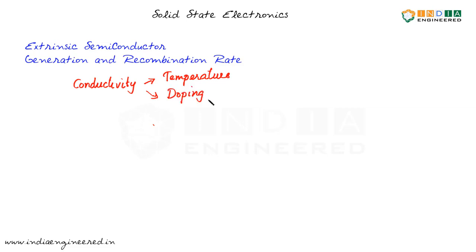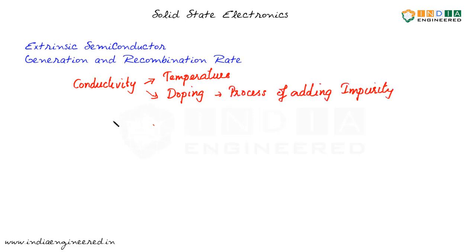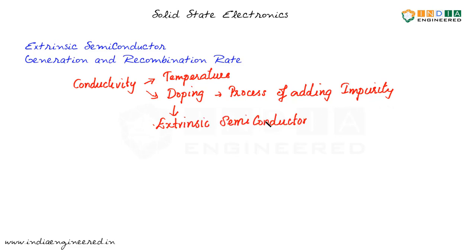Another way we have already discussed is doping. Doping means we are adding an impurity to the semiconductor material — let's take silicon as an example. Doping is the process of adding impurity, and such a doped semiconductor we call an extrinsic semiconductor.